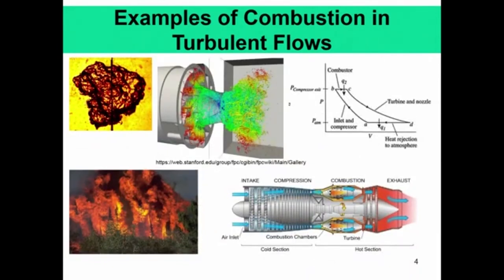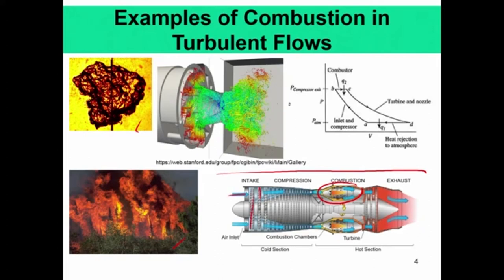Here are some examples of combustion in turbulent flows. We see essentially a gas turbine combustor, and in nature turbulent combustion also occurs in the form of wildfires. In an aero gas turbine engine, this is the intake, followed by different stages of compressors. The compressed air enters the combustor, then goes into the turbine, and then into the exhaust. Combustion happens in the combustor, and if there is an afterburner, it can also happen there.